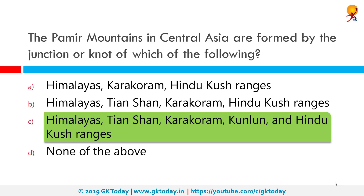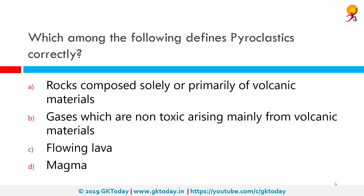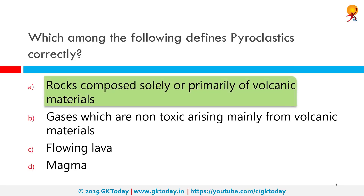Which among the following defines pyroclastics correctly? The correct answer is rocks composed solely or primarily of volcanic material. The word 'pyro' means fire. Pyroclastic rocks are sedimentary clastic rocks composed solely or primarily of volcanic materials, where the volcanic material has been transported and reworked through mechanical actions such as by wind or water.